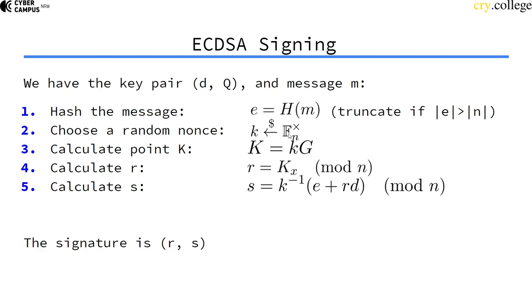And this group is, if you remember, the order—this n is the order of the generator point from the standard. So we need a fresh K, a new K for every signature we compute.